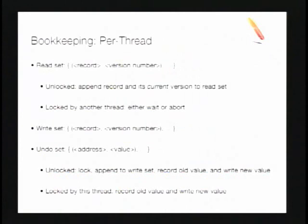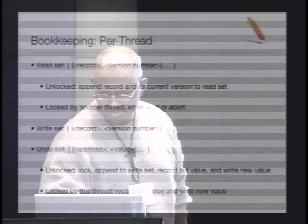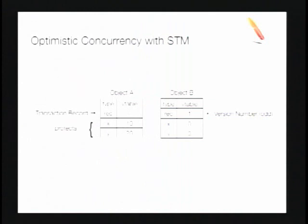We also do bookkeeping per thread. We maintain a read set, updated on any read operation. We also maintain a write set of the transaction records we're acquiring exclusive access to, and an undo set of original values for locations we overwrite — since this is an eager versioning system. Here's a typical layout for a Java or C++ object: the first field is a type descriptor, the second is the transaction record. When it's odd, it's a version number, meaning the object is in a read-only state. The transaction record protects the fields in the object.